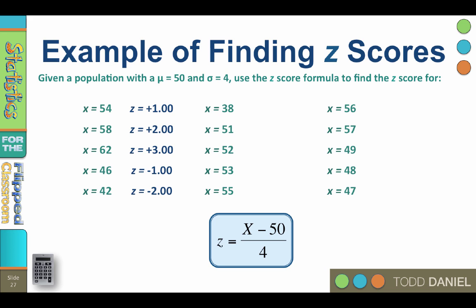For an x of 38, z equals negative 3.00. Now let's start subdividing that standard deviation.